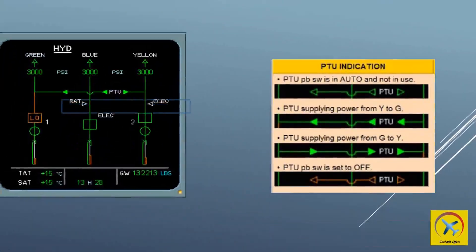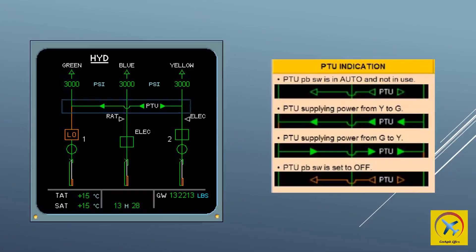When the PTU is in auto, a reversible motor pump is armed and both yellow and green electro-hydraulic valves are open. The PTU runs automatically when the differential pressure between the green and yellow systems is more than 500 psi, except when inhibited. It displays amber when the PTU push button switch is set to off.